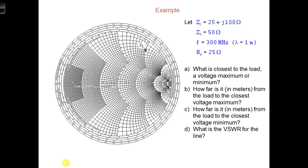Let's continue our example from earlier with the following additional information. So let's say Rg is equal to 25 ohms. First, what is closest to the load, a voltage maximum or a voltage minimum?